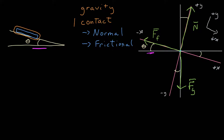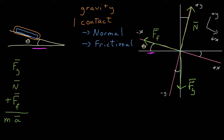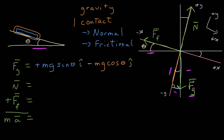I've set up positive x to the right and positive y up. Now to apply Newton's second law, the vector sum of all the forces is equal to the mass of the object times its acceleration. Starting with gravity, I need to find the components of gravity because gravity itself is not along the x or y axis. With the magnitude of the force as the hypotenuse, the lengths of these two sides of the triangle give me the magnitudes of the components. The magnitude of the force due to gravity is mg, so I have mg sine theta as the x component and mg cosine theta as the y component.